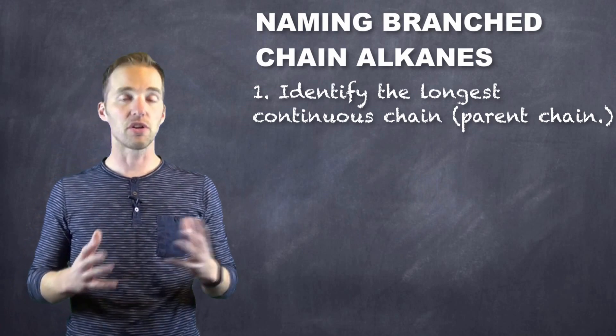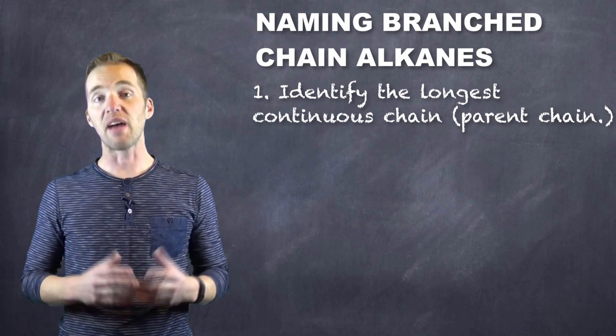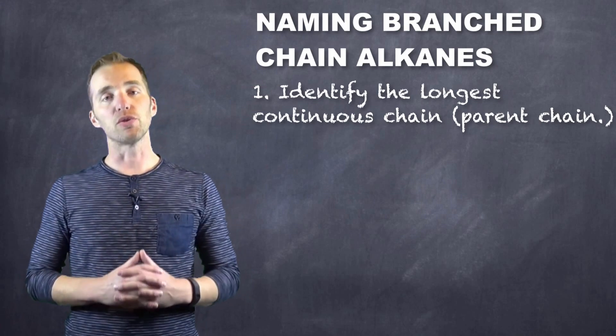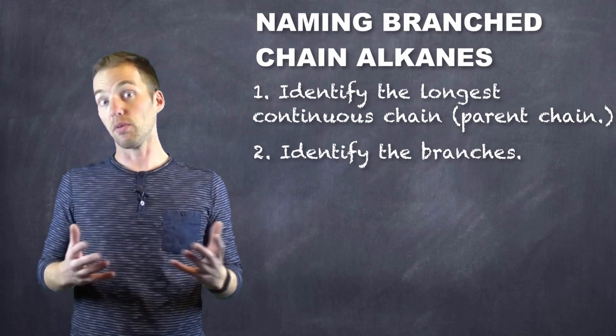So if we have a certain number of carbons, let's say seven, in your longest continuous chain, then you would have a heptane as your parent chain. Then what we're going to do is we're going to identify the groups that are branching off of it, or the branches.